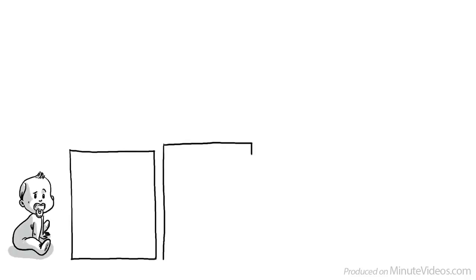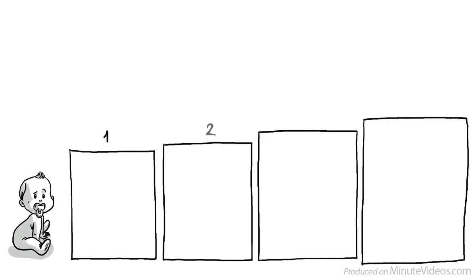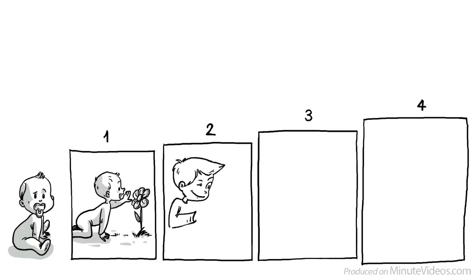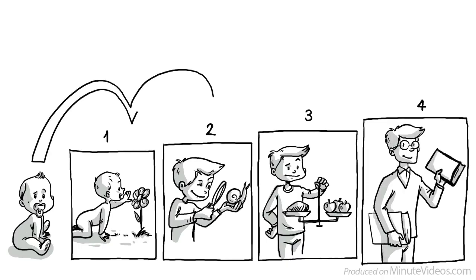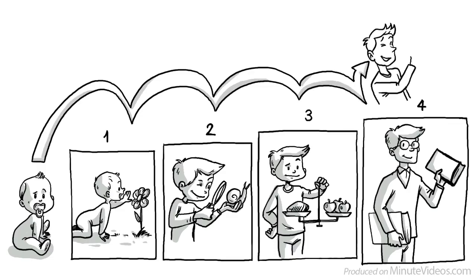Piaget's theory argues that we have to conquer four stages of cognitive development. First, the sensory motor stage. Second, the pre-operational stage. Third, the concrete operational stage. And fourth, the formal operational stage. Only once we have gone through all the stages, at what age can vary, we are able to reach full human intelligence.